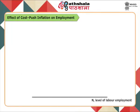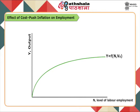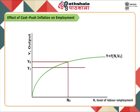In the diagram, N represents the level of labour employment and Y represents output. Initially, the production function is given by Y = f(N, V0), where V0 represents other factor inputs except labour at a fixed level. When output is at Y0, employment along the original production function is N0. Due to cost-push inflation, equilibrium output reduces to Y1. If the production function remains Y = f(N, V0), then employment shall reduce to N1. But if the production function shifts down due to substitution of other factor inputs with labour, the new production function is Y = f(N, V1).